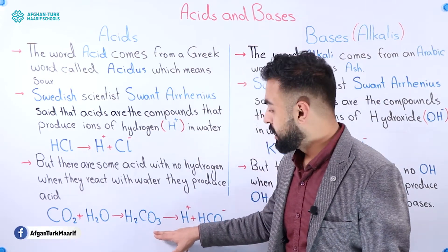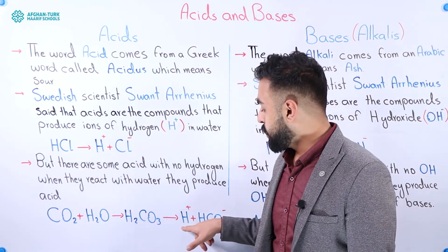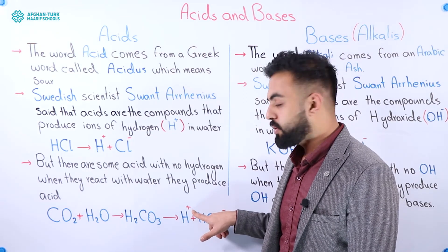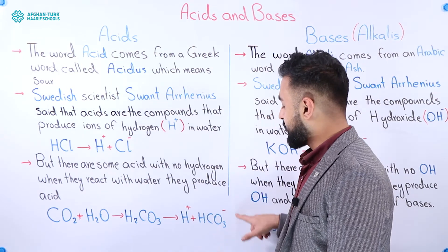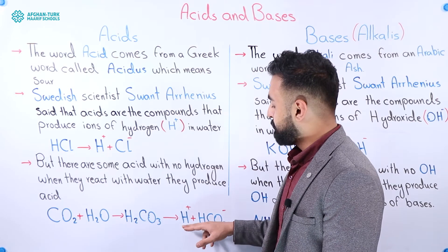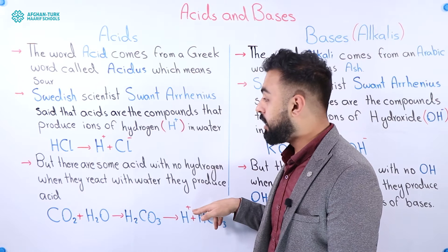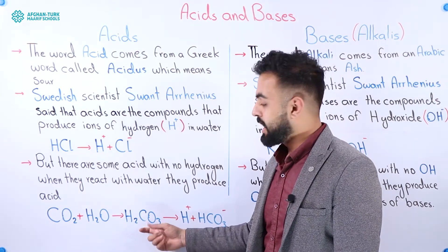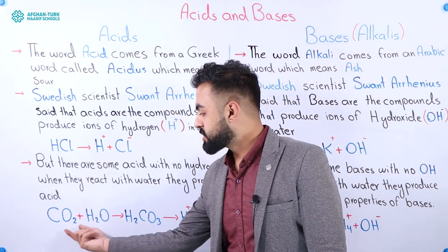For example, carbon dioxide reacts with water and after the reaction it produces an acid. How do we know this is an acid? Because when we dissolve this in water it will divide into two ions: the positive one, hydrogen, and the negative one. It produces ions of hydrogen, so again according to the definition of Svante Arrhenius, this is an acid, and we get this acid from carbon dioxide.